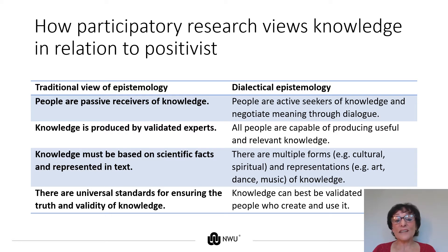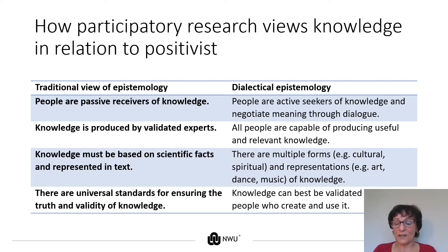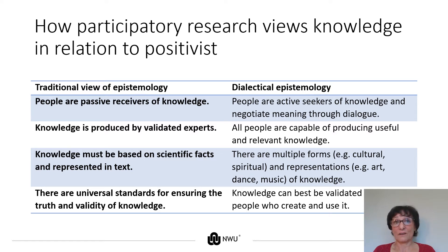There are universal standards for ensuring the truth and validity of that knowledge, and that is why you cannot deviate from them when doing positivist research. You have to follow the hypothesis and null hypothesis steps. Only knowledge created in that way is valid and valuable. This implies that scientists and social scientists will decide for others what knowledge they should draw on — and you can see where the power lies: in the academy and scientific knowledge.